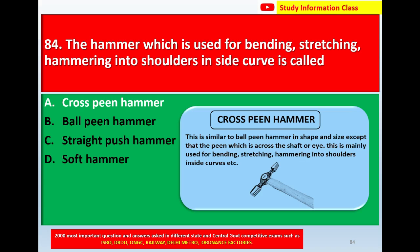The cross pin hammer is similar to the ball pin hammer in shape and size, except that the pin is across the shaft or eye. It is mainly used for bending, stretching, and hammering into shoulders and inside curves. Answer for question 84 is option A: cross pin hammer.